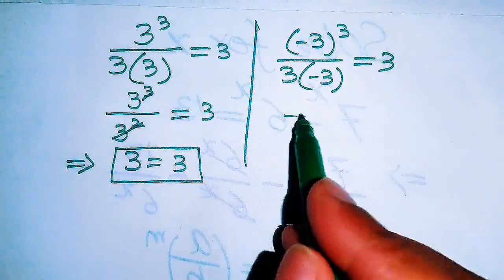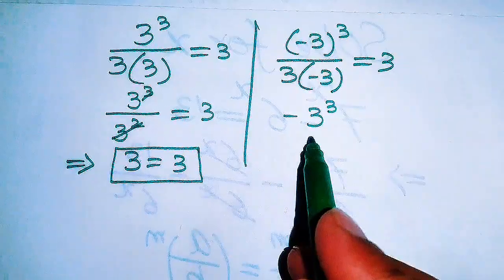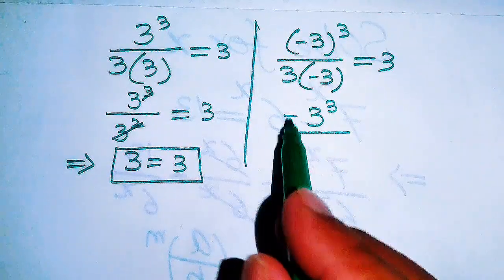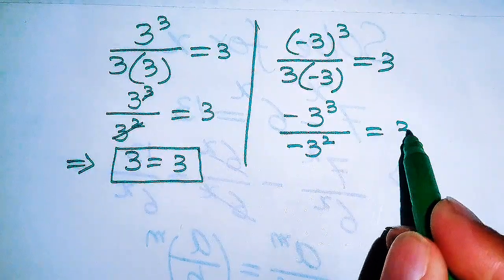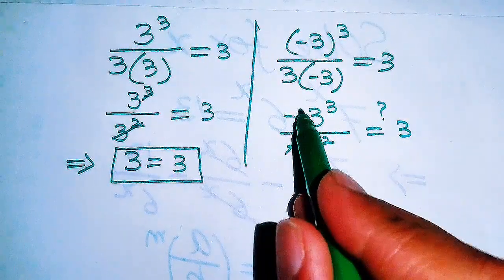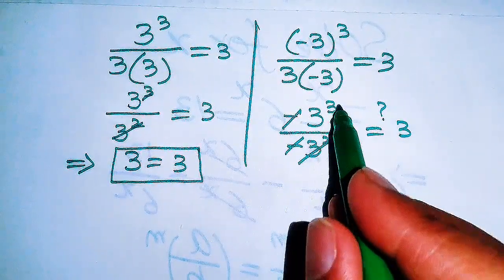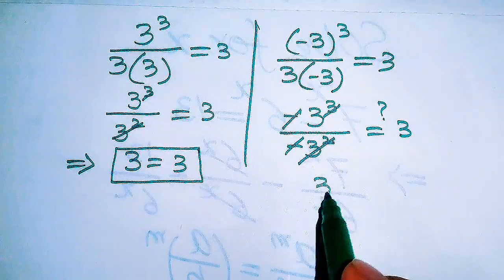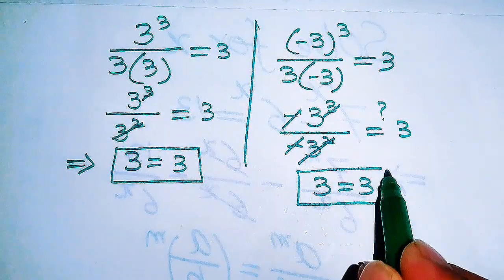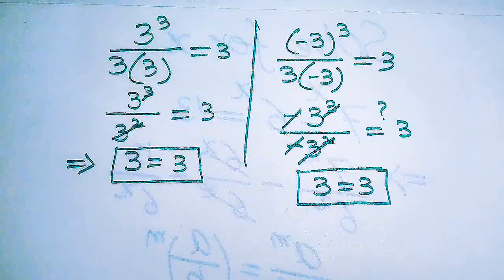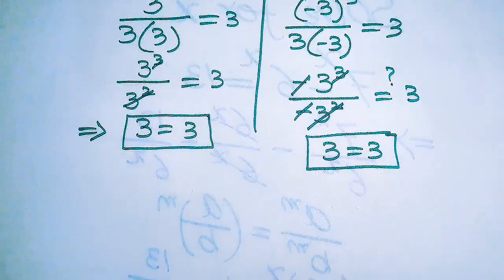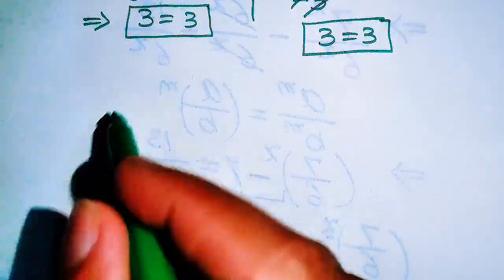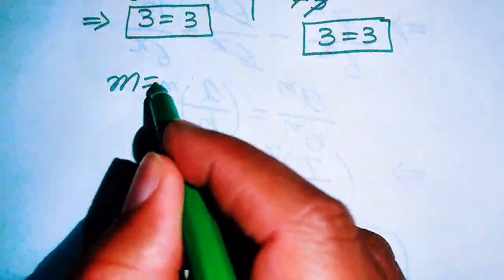This shows that both sides are equal, which means m equals plus 3 satisfies the given equation. Now we verify m equals minus 3: minus 3 to the power of 3 divided by minus 3 squared equals to 3 or not. The negative terms cancel out and we get 3 equals to 3. Both sides are equal, so m equals minus 3 also satisfies the given equation.